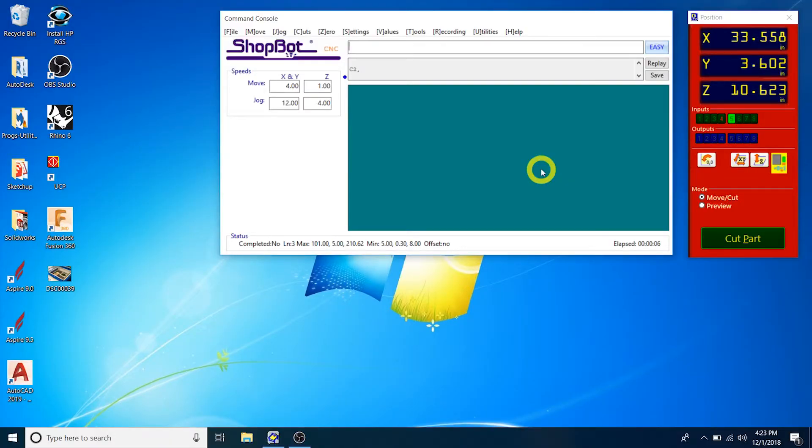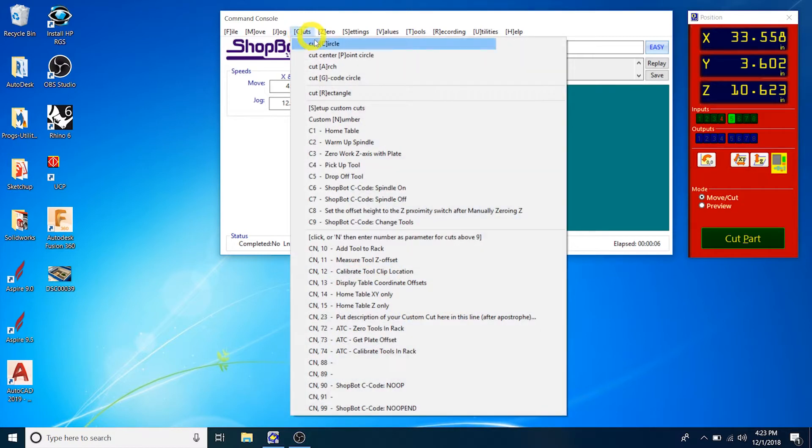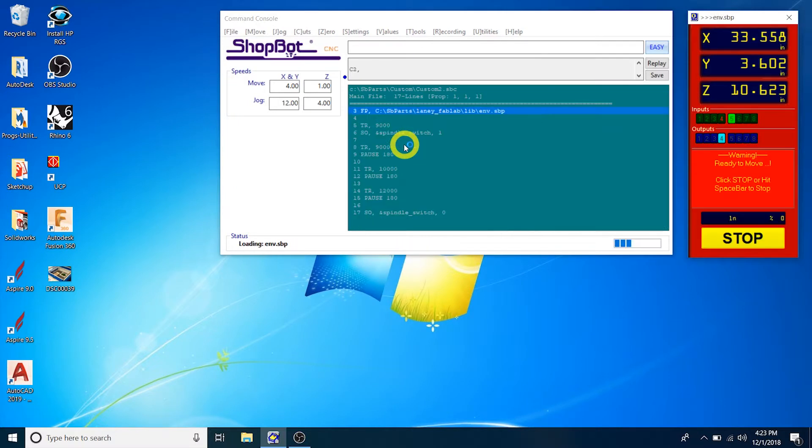Run the spindle warm-up routine if the ShopBot has been idle for more than four hours. Go to the Cuts drop-down and select C2 Warm-Up Spindle.